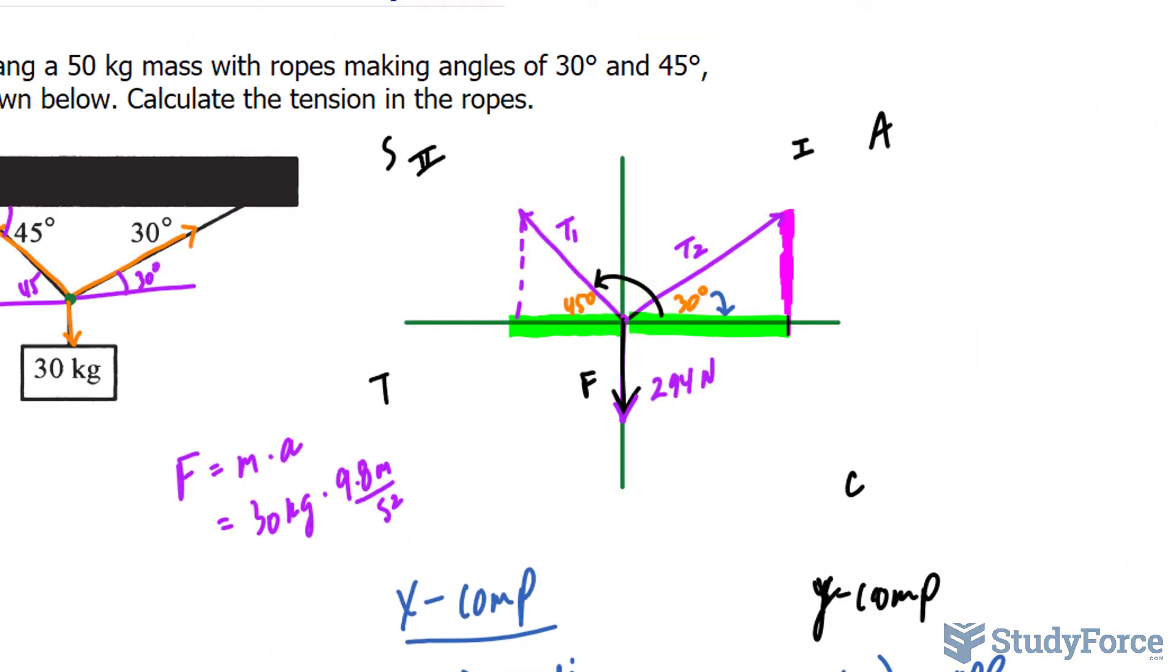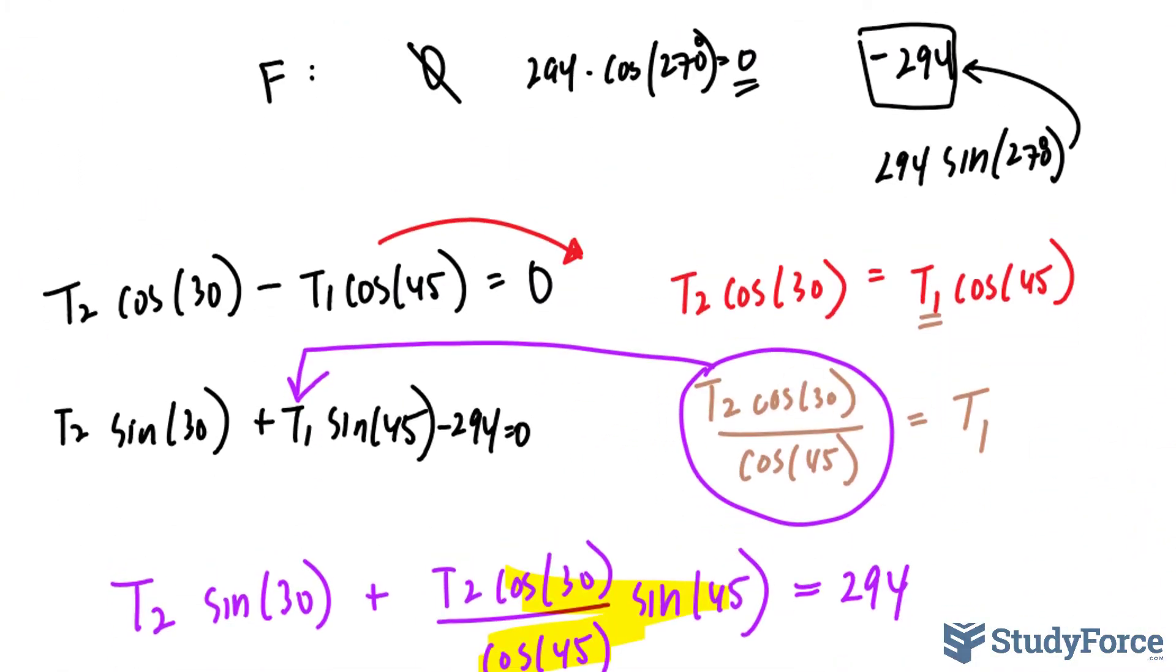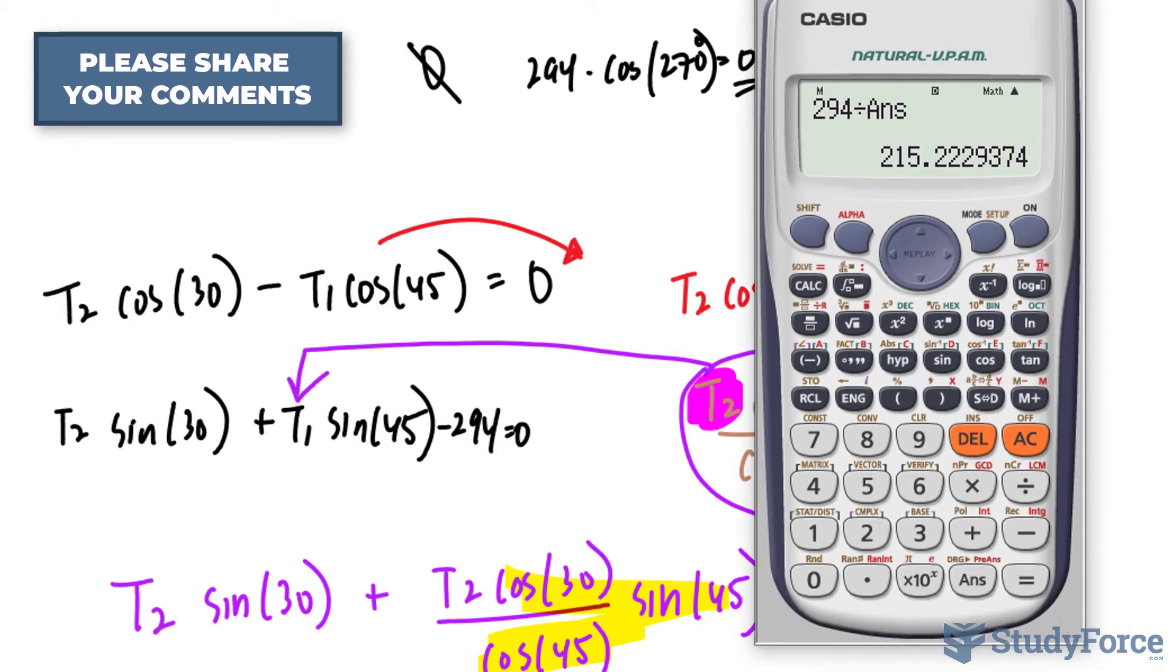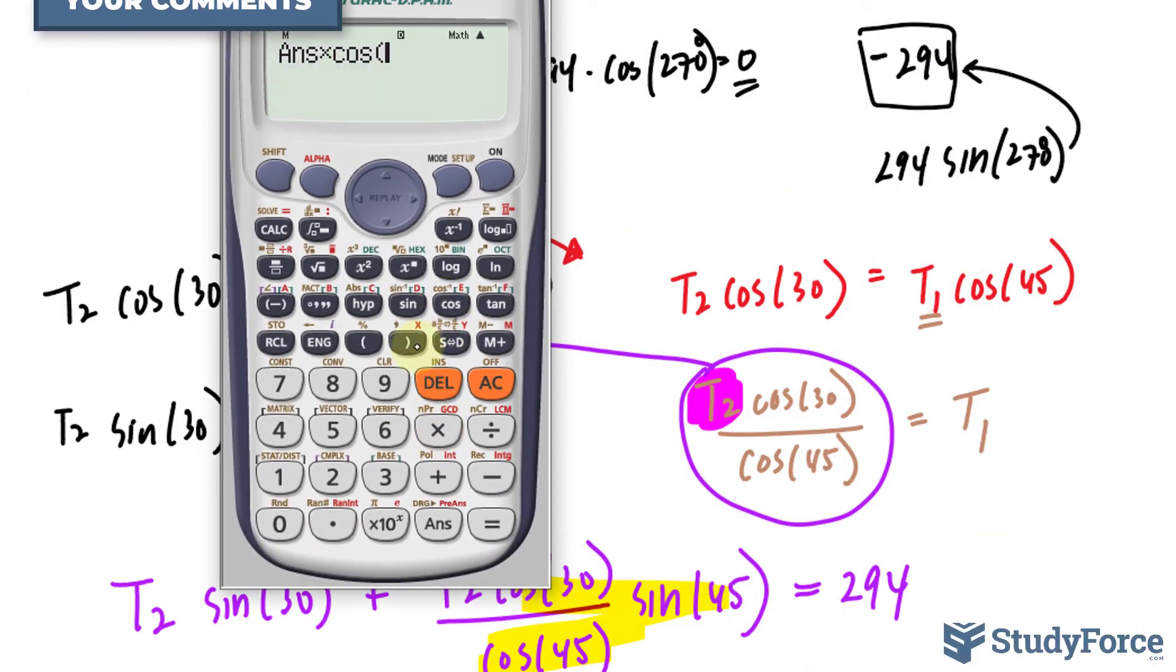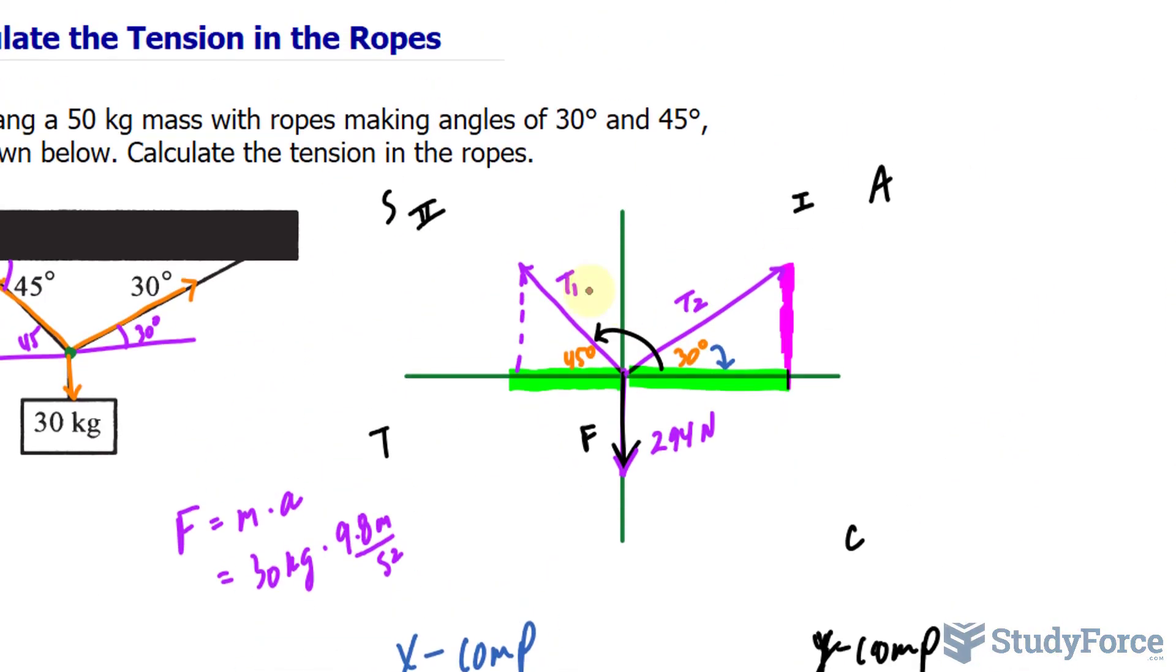To find the tension of that vector, we're practically done. We take that value and substitute it right here. So this value that's on our screen times cosine of 30 divided by cosine of 45, and that gives us 263 newtons for this vector.